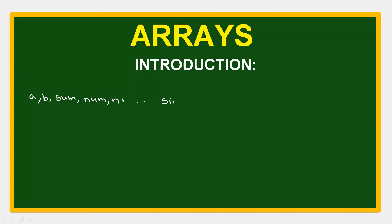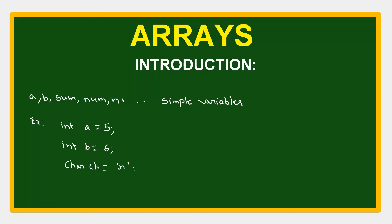Simple variables can be used to store one item of data. For example: int a = 5, b = 6, char variable ch = 'r'. These simple variables can store only one value, but sometimes there will be a situation in which we want to store a group of related items.